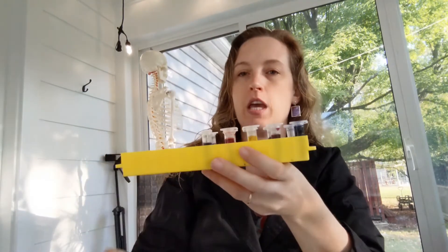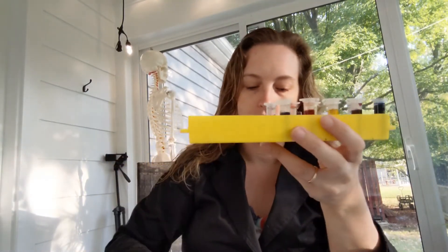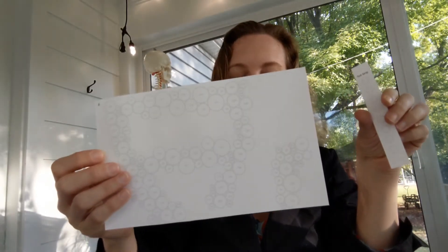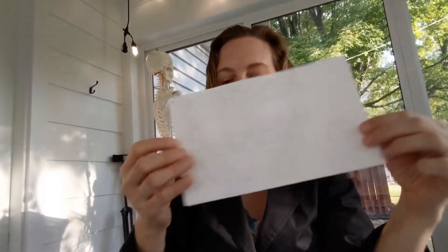So each lab station should be set up to have the five tubes for the student. They should have their test strip to work with. And they should have their canvas that has little circles on it. And then you might want to wait to give them this until after they've successfully completed their piece of the puzzle.